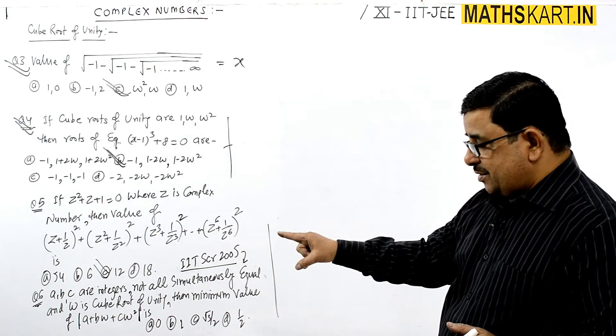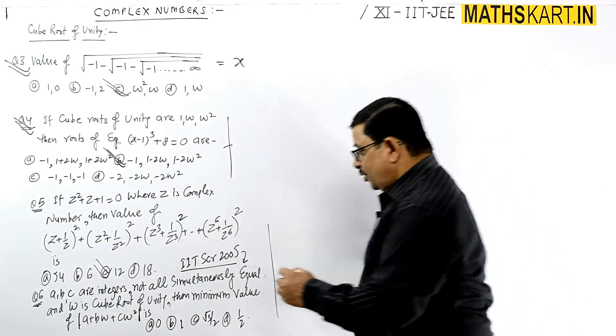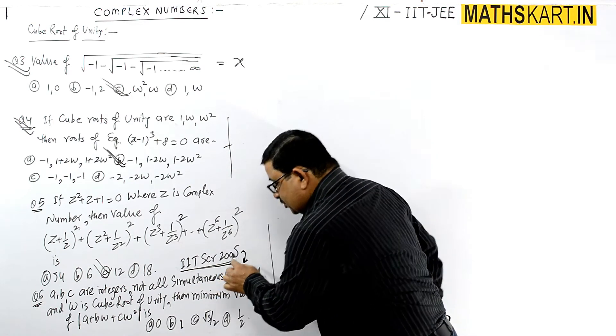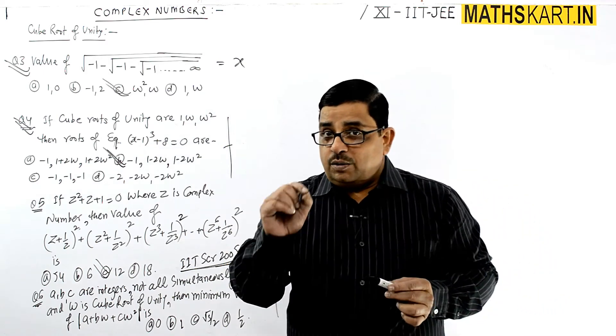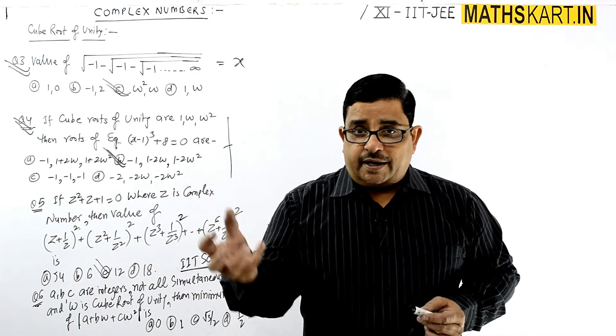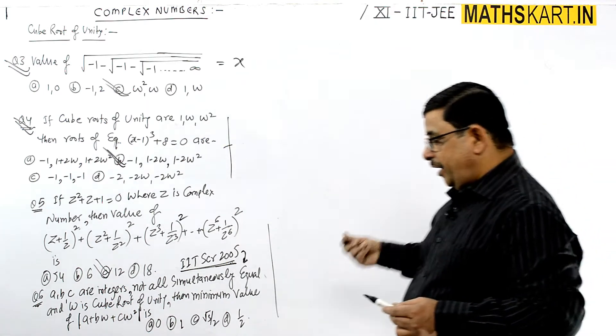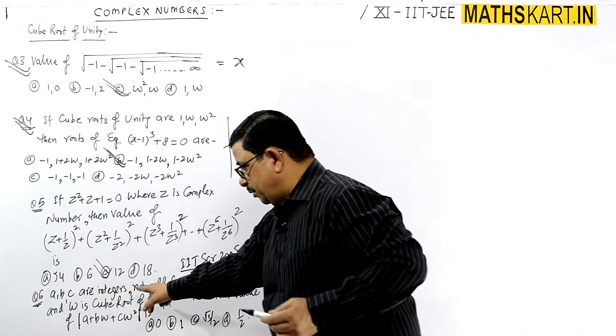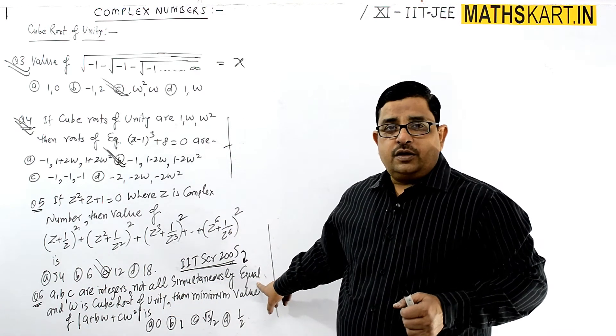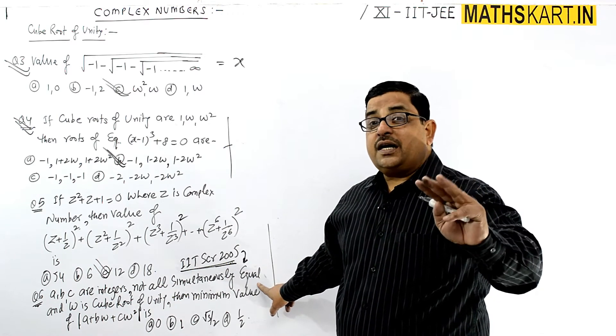Question number 6, IIT screening 2005: A, B, C are integers, not all simultaneously equal. A, B, C are three integers, and they are not all equal at the same time.